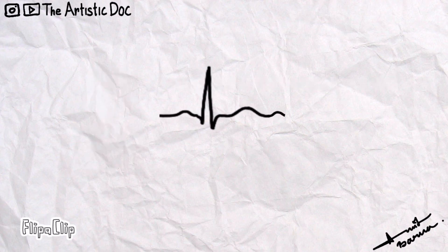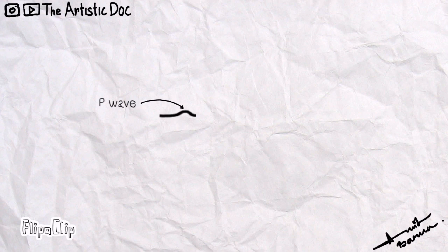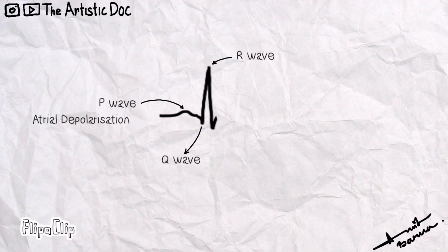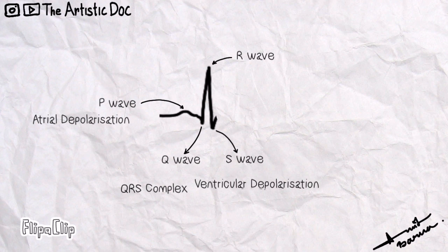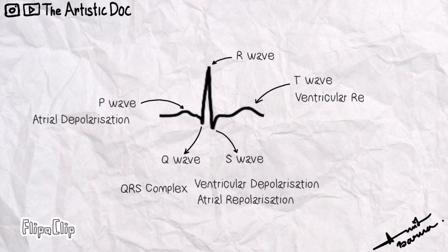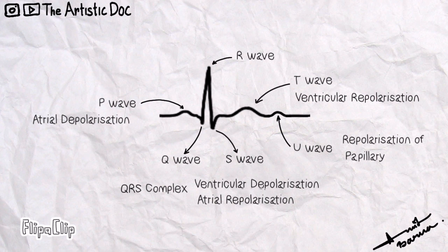Now come to the components of ECG. First comes a small elevation called the P wave, which represents atrial depolarization. Then comes a first downward deflection called the Q wave, then a large upward deflection called the R wave, and again a downward deflection called the S wave. This complex is called the QRS complex, which represents ventricular depolarization — the atrial repolarization is masked by the large depolarization effect. Then comes the T wave, which shows ventricular repolarization, and lastly a small U wave corresponding to the repolarization of the papillary muscles.